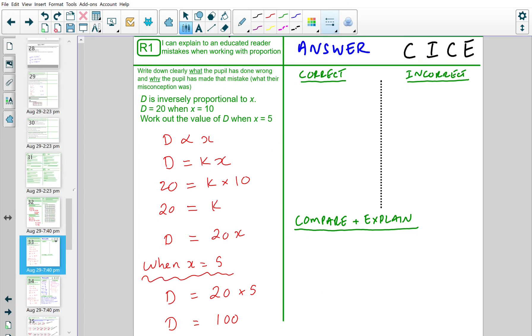Question is as follows: D is inversely proportional to x. D equals 20 when x is equal to 10. Work out the value of D when x is equal to 5. We need to be able to clearly explain what the pupil has done wrong and why the pupil has made that mistake.